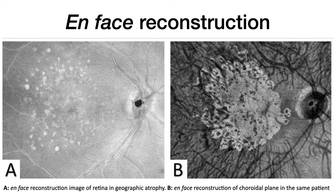Having multiple B-scans, one can make an en-face reconstruction image and go at different depths — such as superficial retina, mid-retina, and deep retina/choroid — to get information about, for example, geographic atrophy. This is used mostly experimentally in academic institutions.